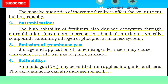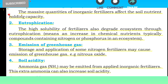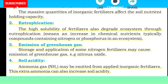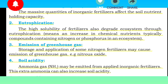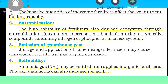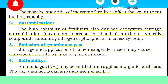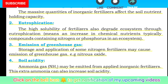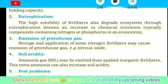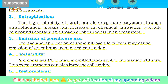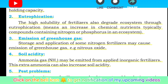Number 3: Emission of greenhouse gases. Storage and application of some nitrogen fertilizers causes emission of greenhouse gases, including nitrous oxide. یعنی جب ہم nitrogen fertilizers کو store اور استعمال کرتے ہیں تو وہ greenhouse gases کا سبب بنتی ہیں جس میں nitrous oxide شامل ہے۔